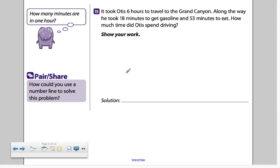This is tough stuff. Let's just work together and see what we can do. It took Otis six hours to travel to the Grand Canyon. One step at a time. Along the way, he took 18 minutes to get gasoline and 53 minutes to eat. How much time did Otis spend driving? So they like to make us subtract. Look at this little dinosaur dude. How many minutes are in one hour? He wouldn't ask that for no reason. He wants us to change hours into minutes. Let's do that first.